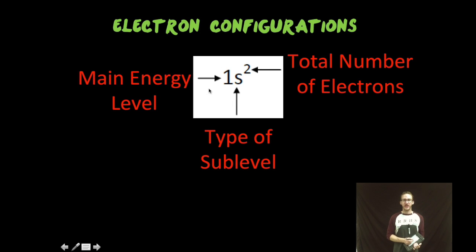Okay, so here's what you're going to see in standard electron configurations: a large number indicating the main energy level, the letter indicating your type of sub-level, and then your superscript indicating the total number of electrons in that sub-level.